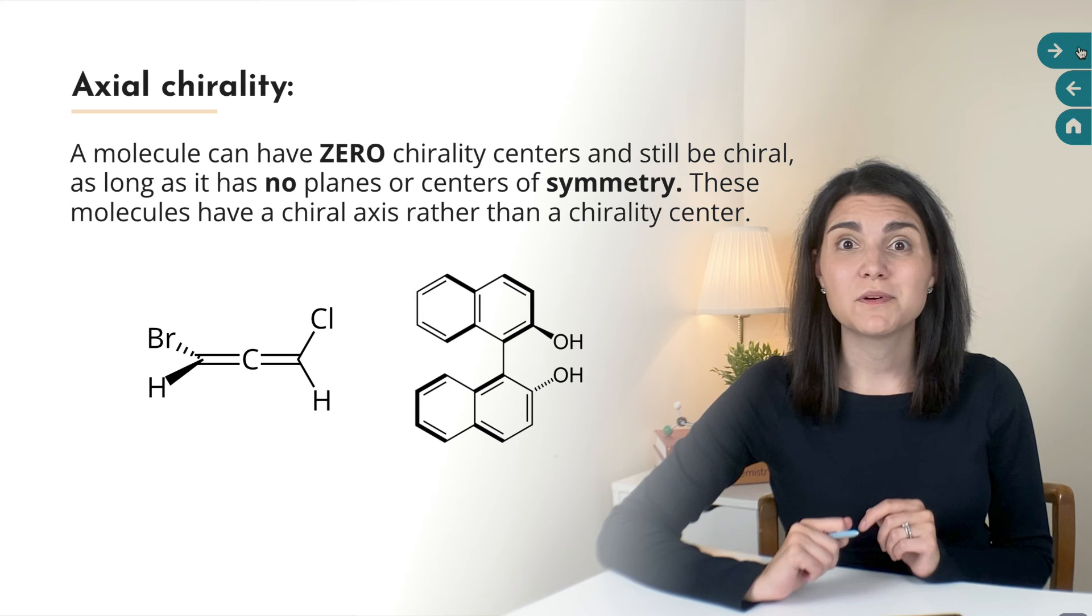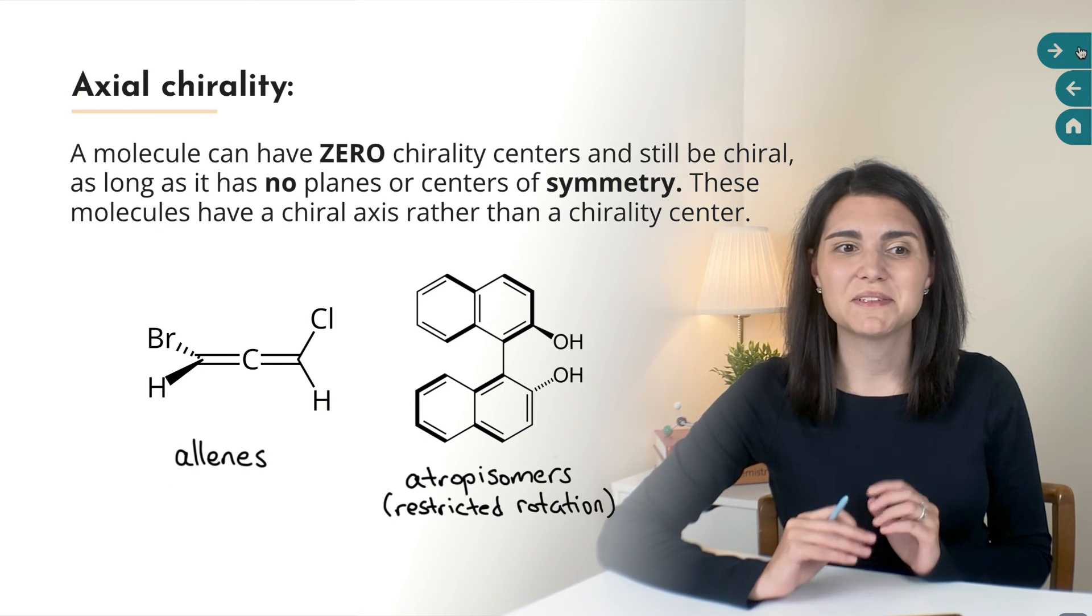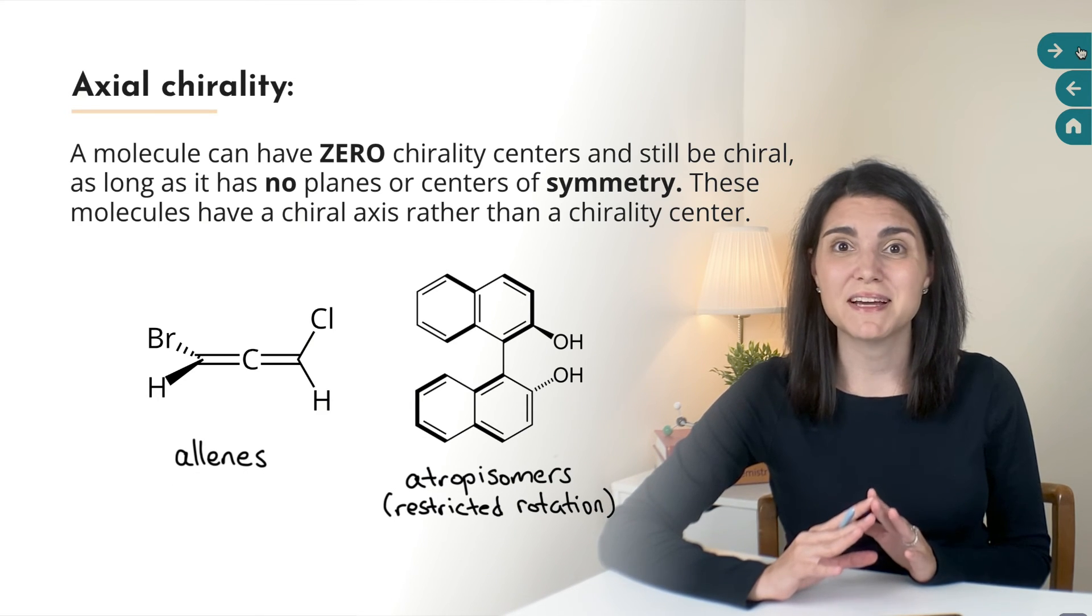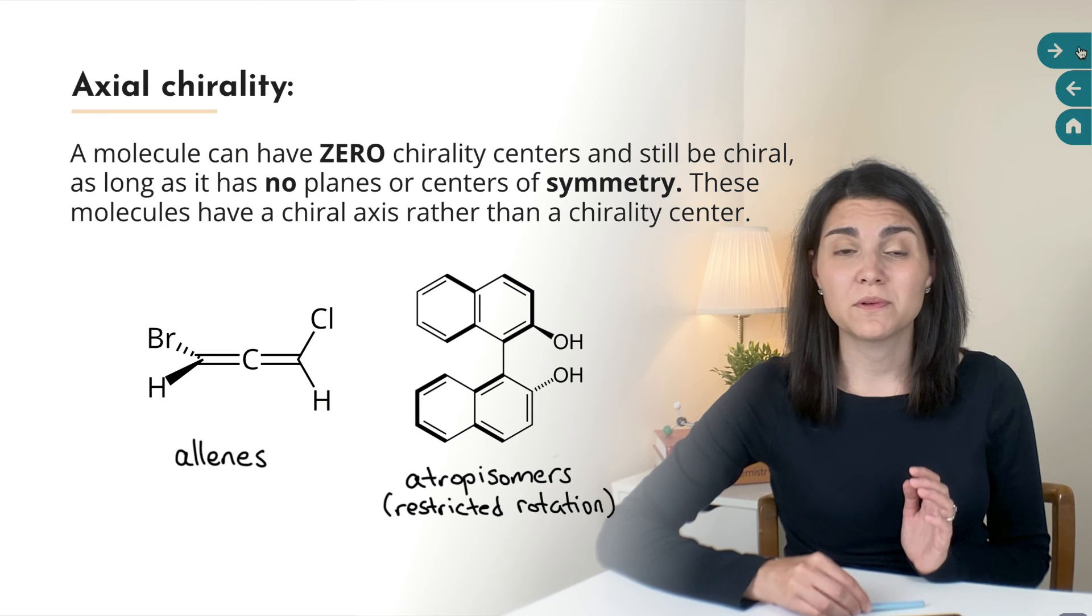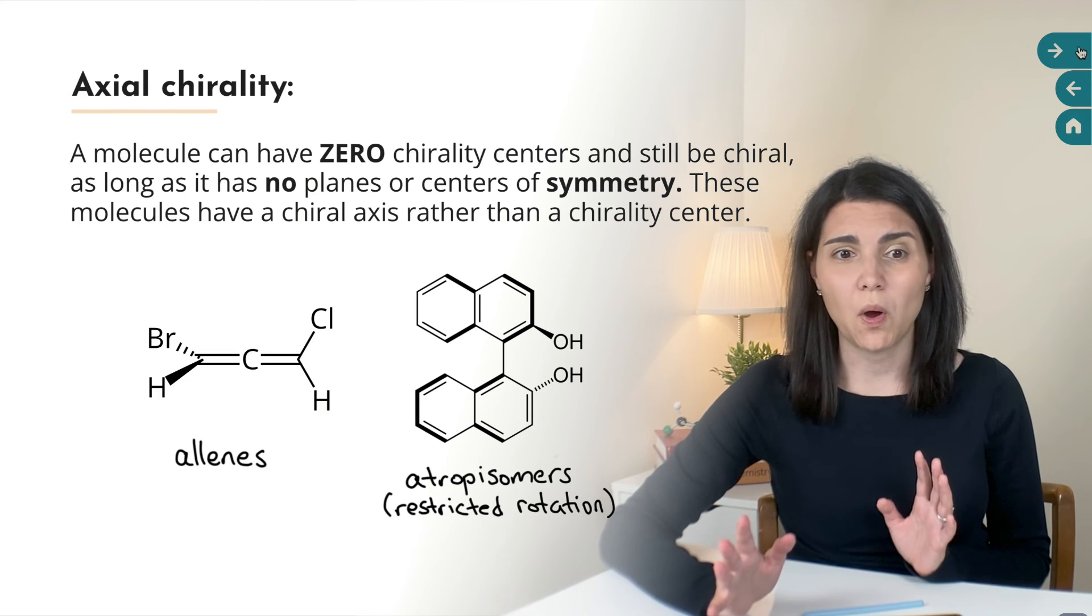Fascinatingly, it's also possible for a molecule to have zero chirality centers and still be chiral, as long as it passes the test of having no plane or center of symmetry. An example of this phenomenon includes a type of molecule called an allene, where there are two consecutive double bonds. I built an allene, and this of course only goes for allenes that have two different groups on each side of the allene. As you can see, when I rotate this molecule around, there's no way that we can cut this in half. There's no plane of symmetry and there's no center of symmetry in this molecule, so even though none of these carbons is a chirality center, this molecule is still chiral.